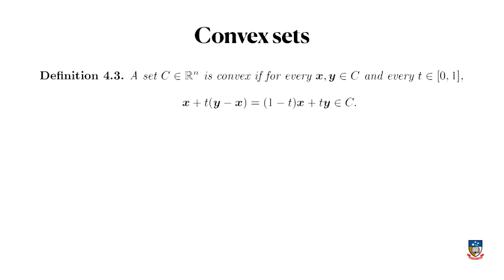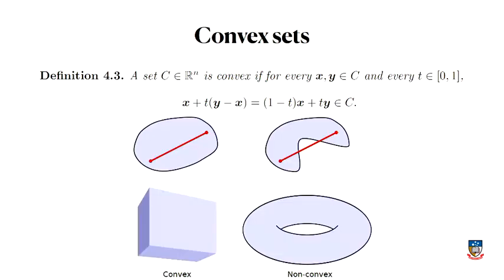To talk about convex programs, we need to know what a convex set is. A set is convex if for every point in the set and for every real number t between 0 and 1, the definition holds. Basically, this expression is the straight line connecting points x and y. So in English, a set is convex if for every pair of points in the set, the straight line connecting those two points stays within the set. It's very reminiscent of what it means to be a convex function, where every pair of points on the function has the straight line connecting them sit above the function.